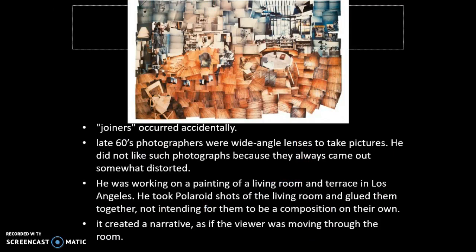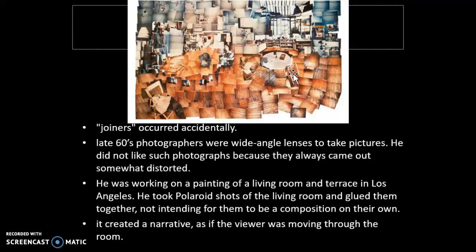Joiners actually occurred as an accident. Late 60s photographers were using wide-angle lenses to take pictures, but Hockney really didn't like these photographs because they were always very distorted. This accident occurred when he was trying to paint a scene of a living room — he ended up taking a lot of Polaroids of the living room and glued them all together as a photo reference of the space. But what resulted was actually a very interesting composition. You can see it's a bit distorted, with images repeated and layered together, and quite flattened and geometric. He was really excited about this because it seemed to create a narrative for the viewer walking through the room.